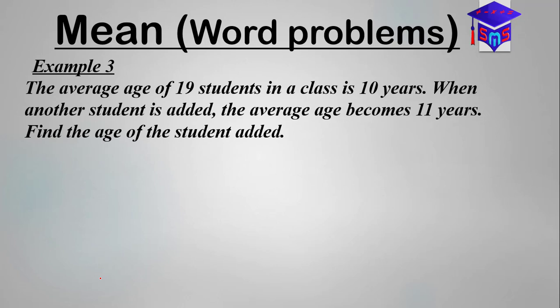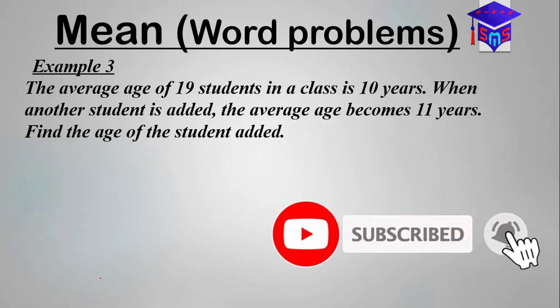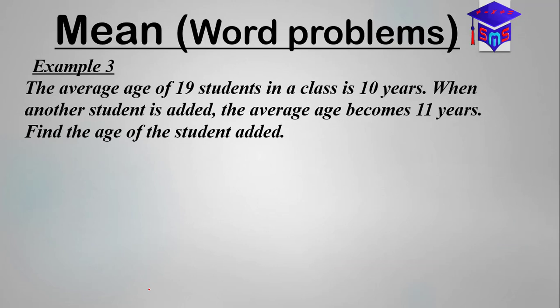All right, so we are back again to look at this question as promised, which also has to do with the application of averages or mean. This question is saying the average age of 19 students in a class is 10 years. When another student is added, the average age becomes 11 years. Find the age of the student added.